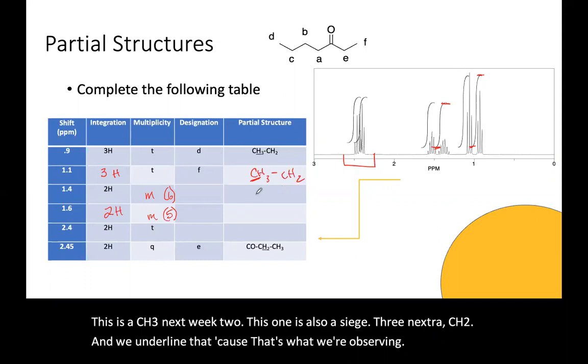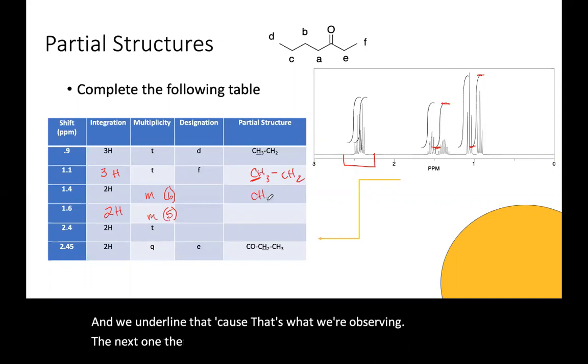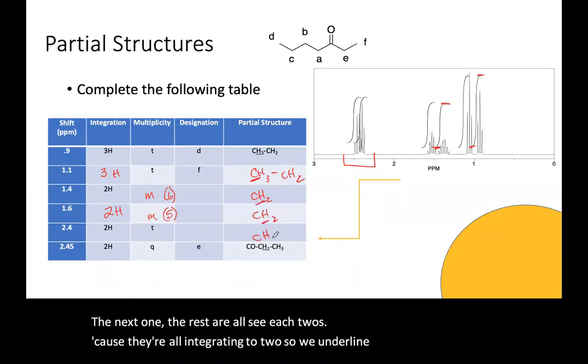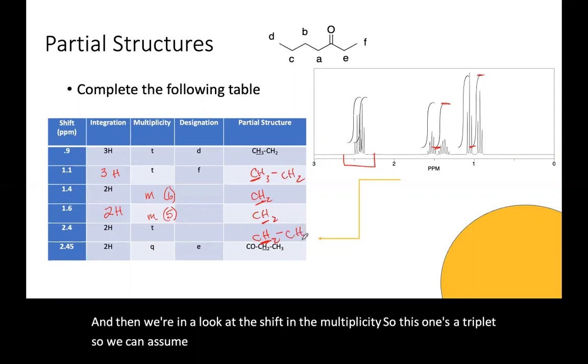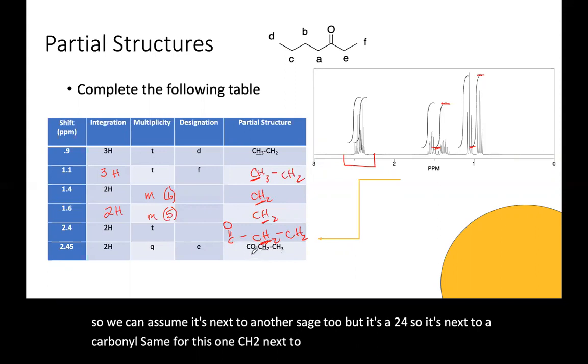The next one, the rest are all CH2s because they're all integrating to two. So we underline that. And then we're going to look at the shift in the multiplicity. So this one's a triplet. So we can assume it's next to another CH2, but it's a 2.4. So it's next to a carbonyl. Same for this one. CH2 next to a CH3 and at 2.4. So next to a carbonyl.